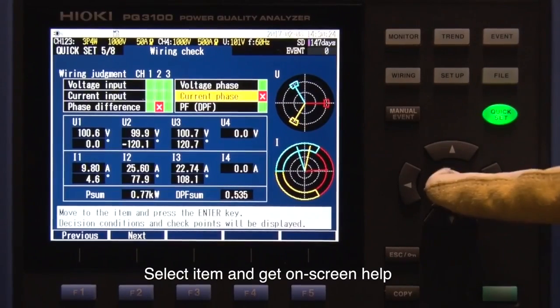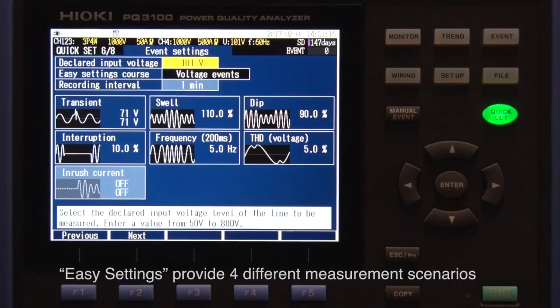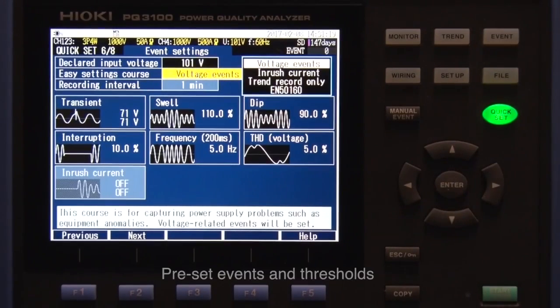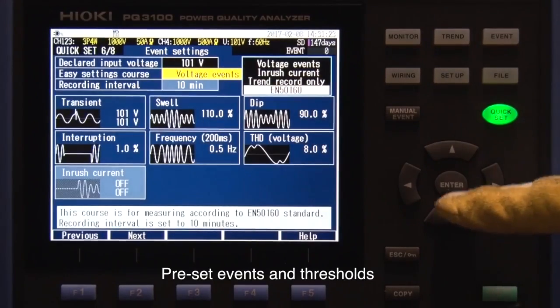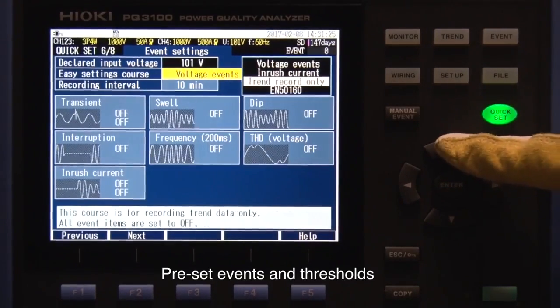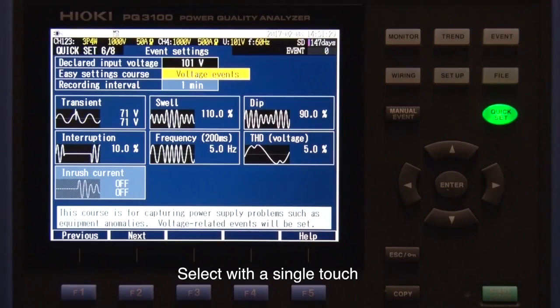Select the items you want to adjust and get tips on how to fix the problems. Within the quick set function under easy settings, you can choose from several different measurement scenarios. The screen shows the threshold set for each parameter. Simply select the scenario with a single touch.